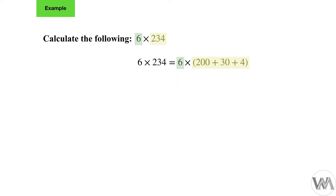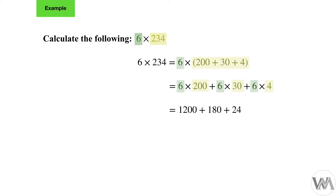Six times 254 is the same as saying six times 200, plus six times 30, plus six times four, adding those results together. So this equals six times 200, plus six times 30, plus six times four. Working each group out: six times 200 is 1200, plus six times 30 is 180, plus six times four is 24.